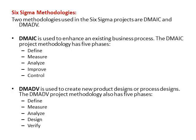There are two Six Sigma methodologies. DMAIC is used to enhance an existing business process and has five phases: Define, Measure, Analyze, Improve, and Control. DMADV is used to create a new product design or process design and also has five phases: Define, Measure, Analyze, Design, and Verify. The key difference is that DMAIC enhances existing processes while DMADV creates new product or process designs.